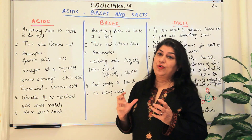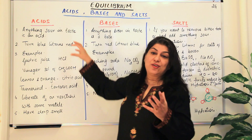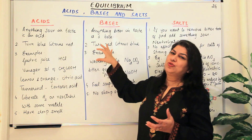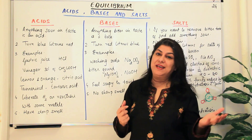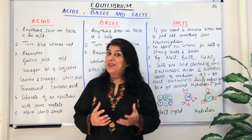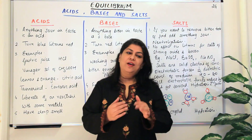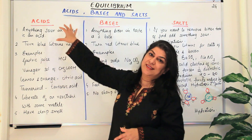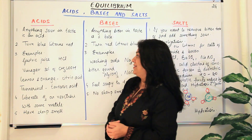We also know from class 10 studies that acids are those compounds that turn blue litmus red, and bases are those that turn red litmus blue. We did all the other indicators too. In case you've forgotten about acids and bases, I would encourage you to revise your class 10 syllabus — go back and watch a video on acids, bases, and salts and how they react to different kinds of indicators.